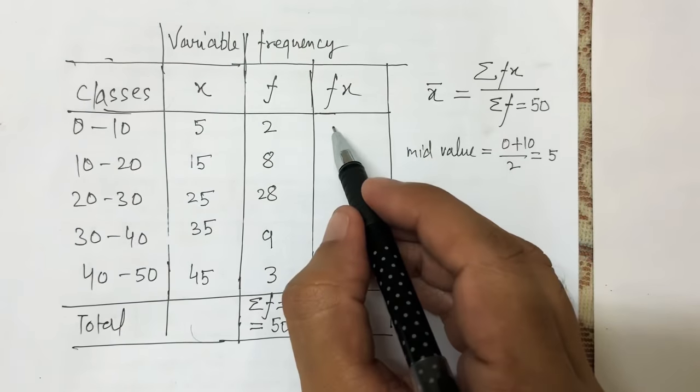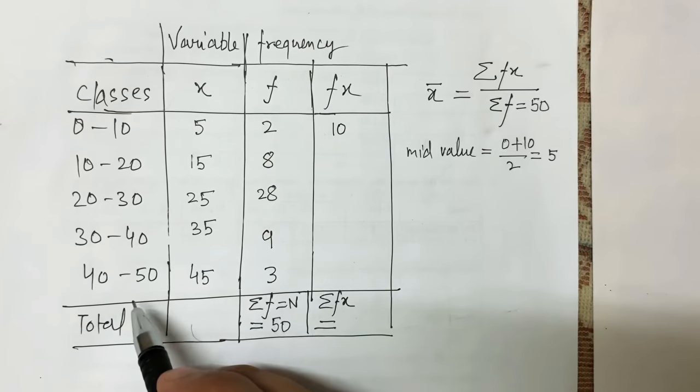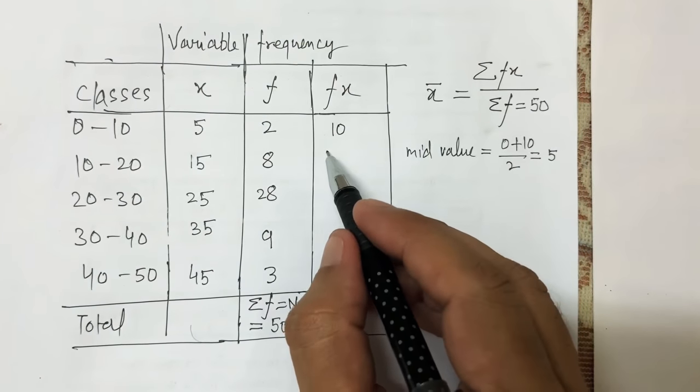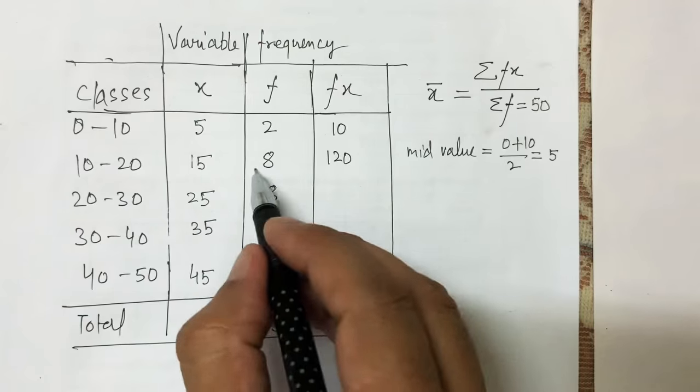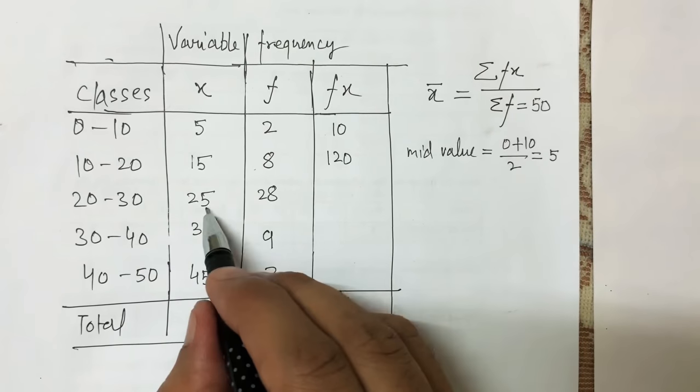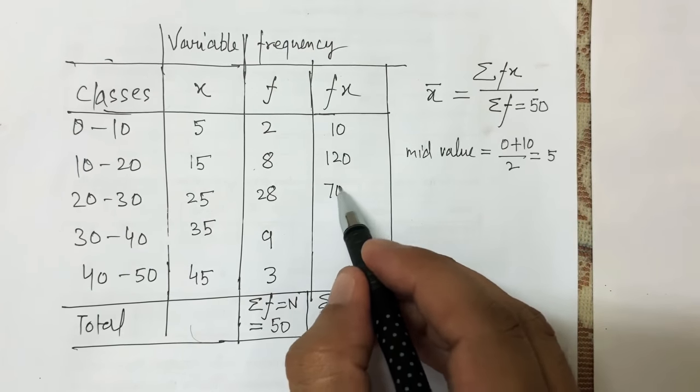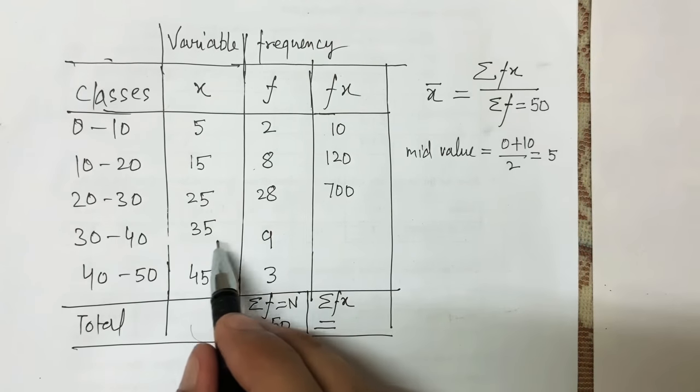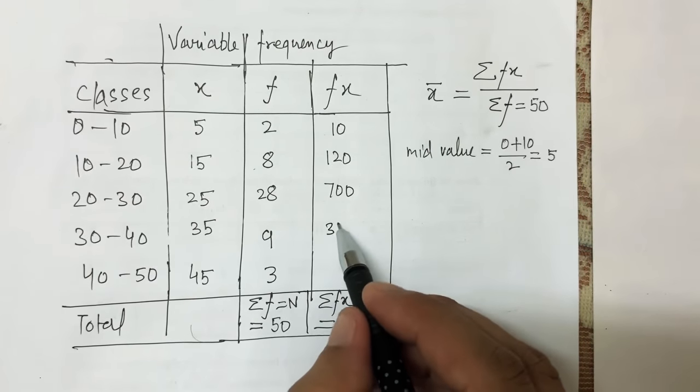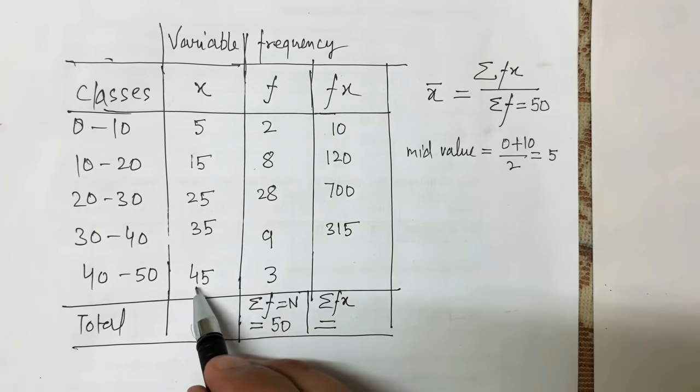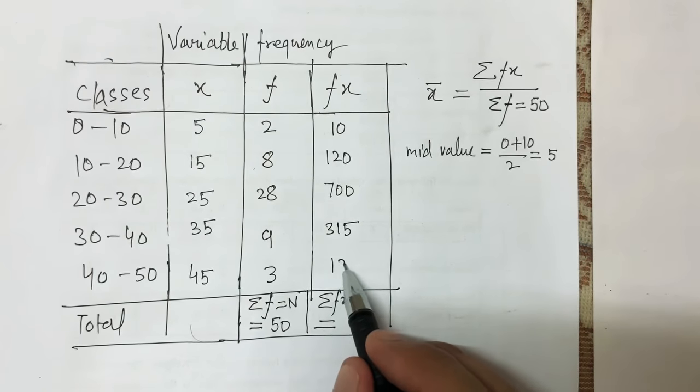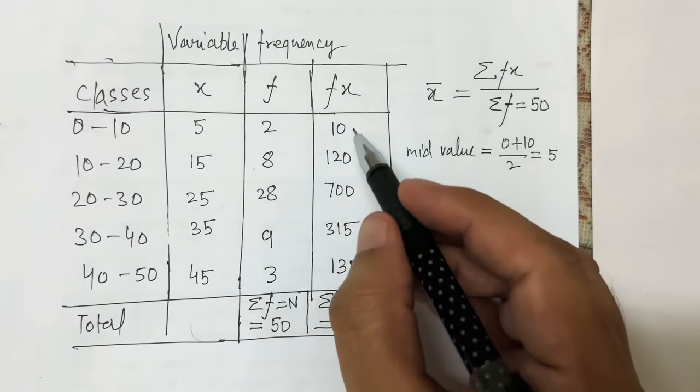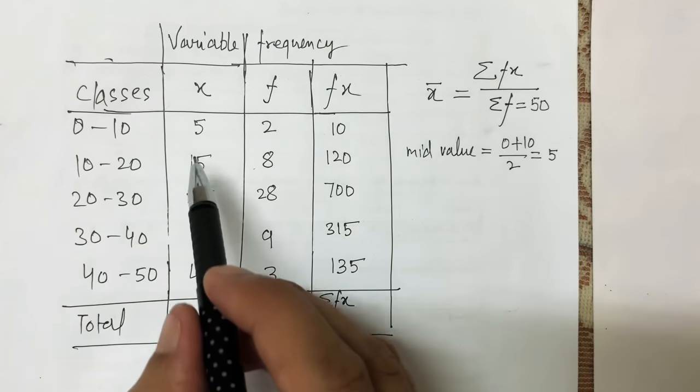Now I calculate fx (frequency multiplied by mid value): 5×2 = 10, 15×8 = 120, 25×28 = 700, 35×9 = 315, and 45×3 = 135.